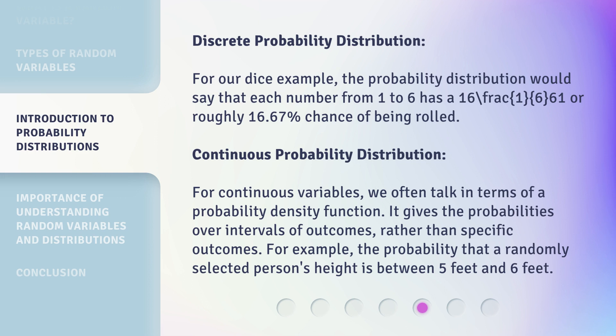For our dice example, the probability distribution would say that each number from 1 to 6 has a 1/6, or roughly 16.67% chance of being rolled.